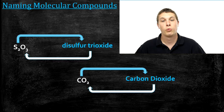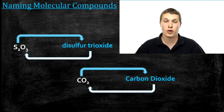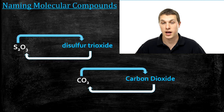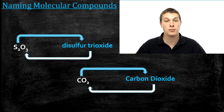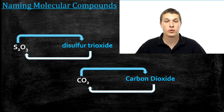Today on Real Chemistry, we're going to talk about naming molecular compounds. The idea here is to be able to go from a chemical formula for a molecular compound, like S2O3, to its name, disulfur trioxide. Or to go the other direction — say you're given the name carbon dioxide, you should be able to write down that that corresponds to CO2.